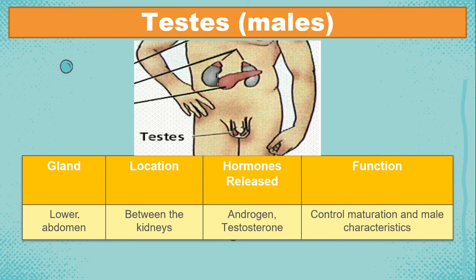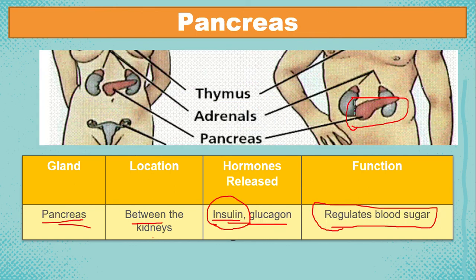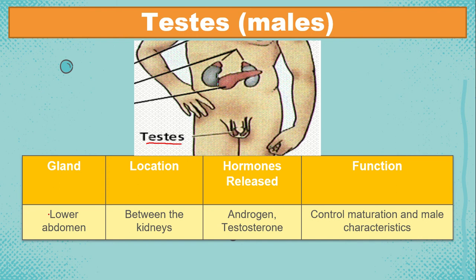Next, we have the testes gland, located in the lower abdomen. It releases hormones called androgen and testosterone, which control the maturation and male characteristics — such as the production of sperm cells, development of the voice box, muscle development on the shoulders, and also the beard and mustache.